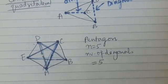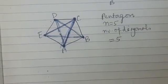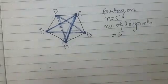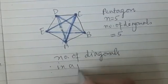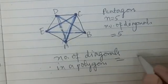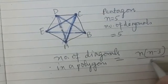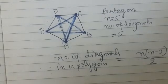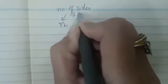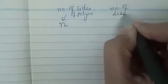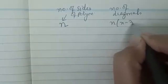Now I will share an algebraic formula for calculating the number of diagonals when the number of sides is known. The formula for the number of diagonals in a polygon is: N(N − 3) / 2, where N represents the number of sides of the polygon.